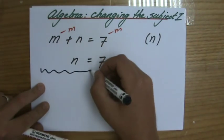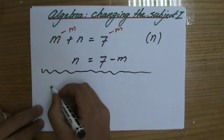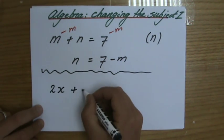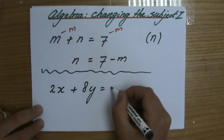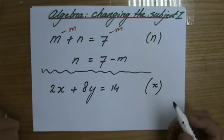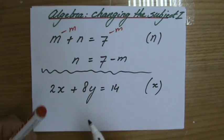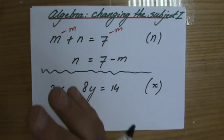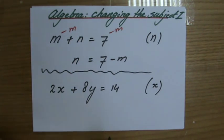All right, so one more example. What if it says 2x plus 8y equals 14, and I have to make x the subject. So my aim is for it to say x equals, and then all the other terms.